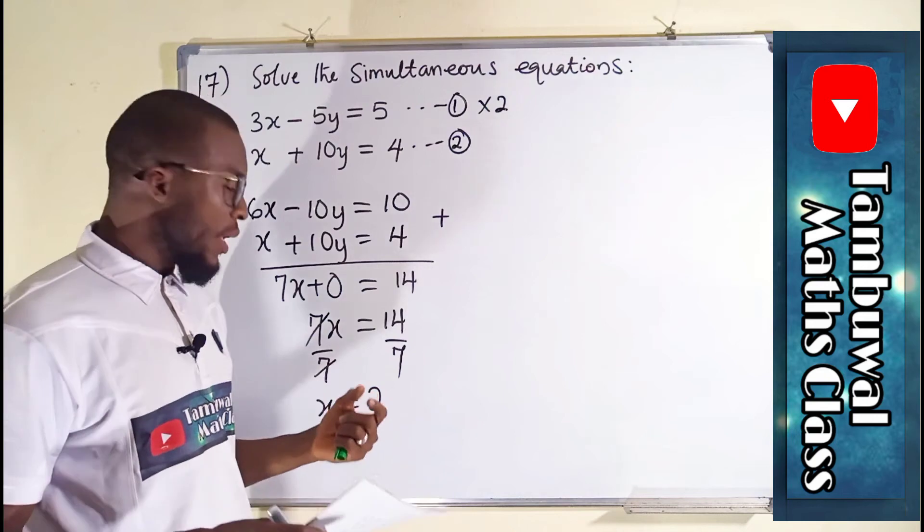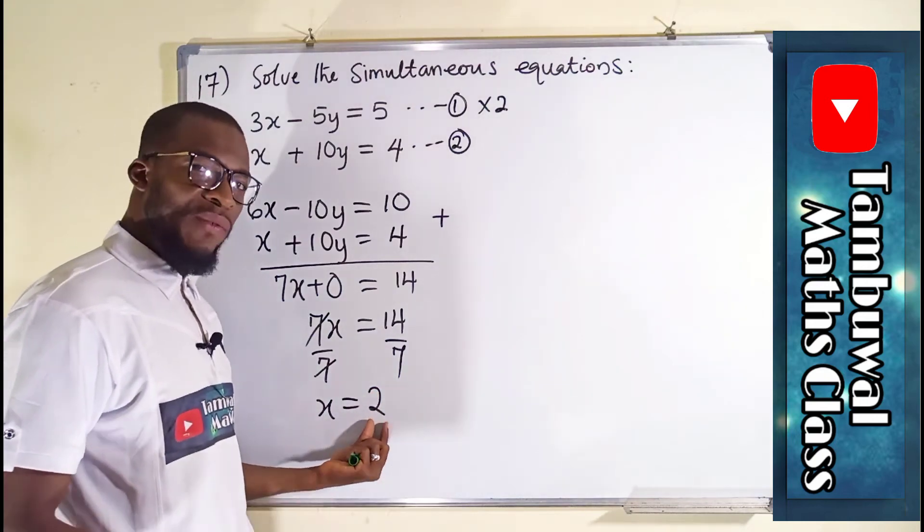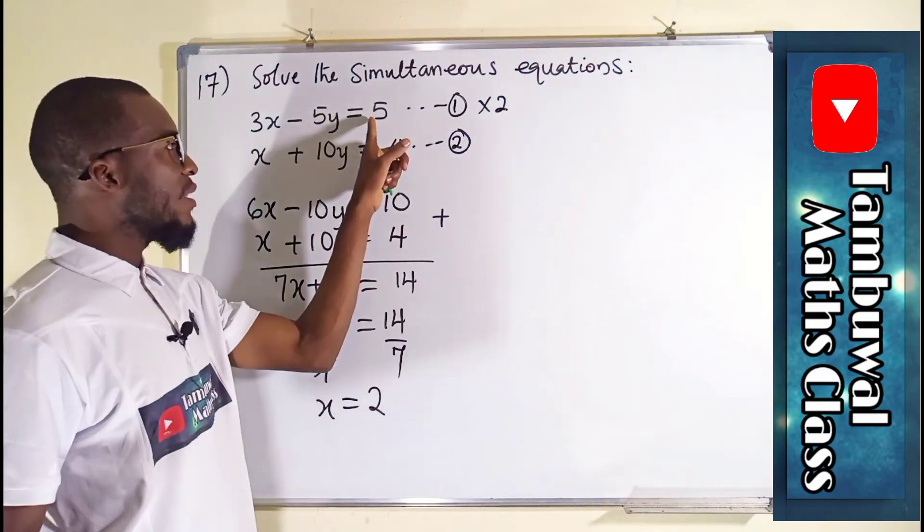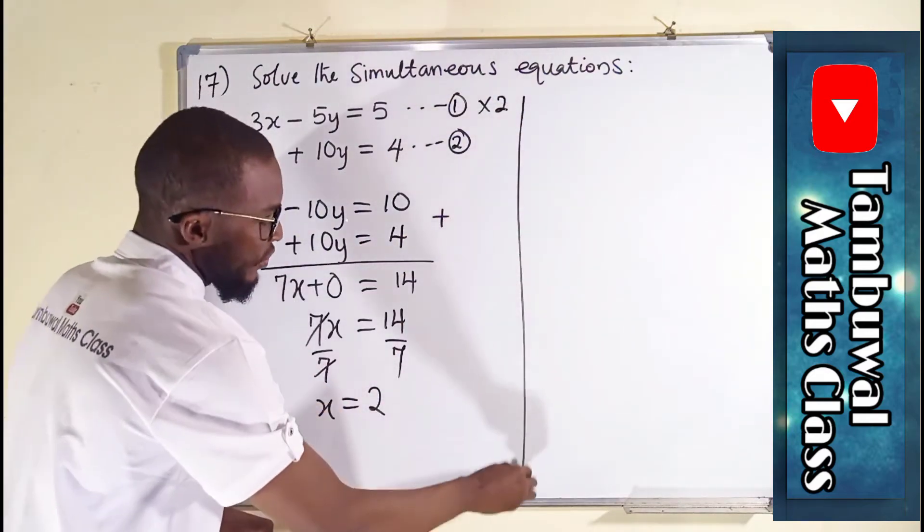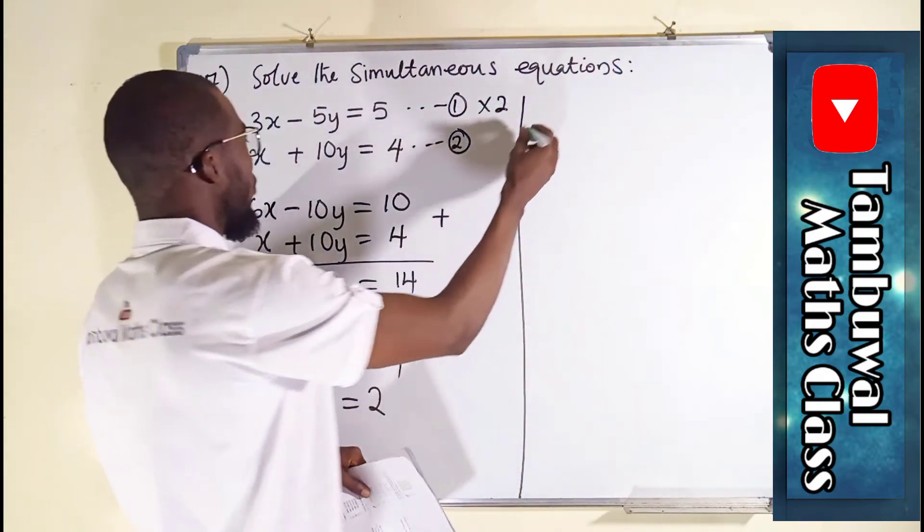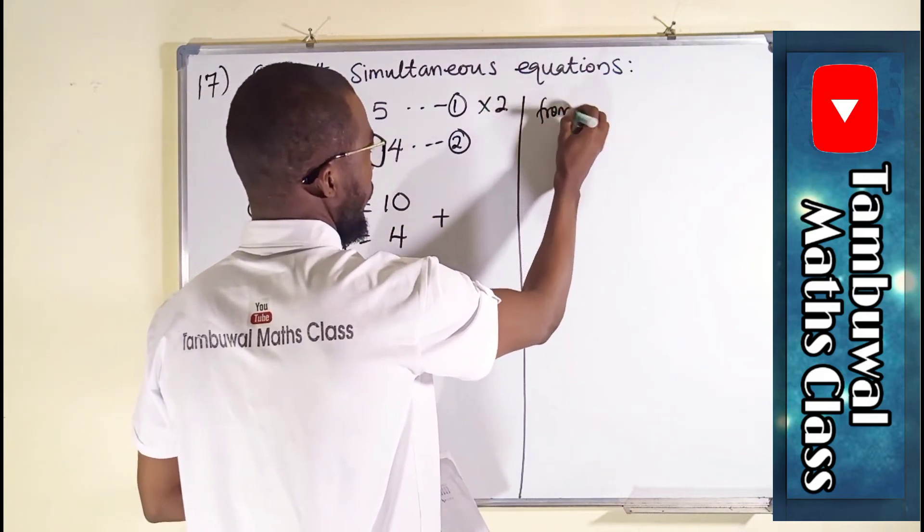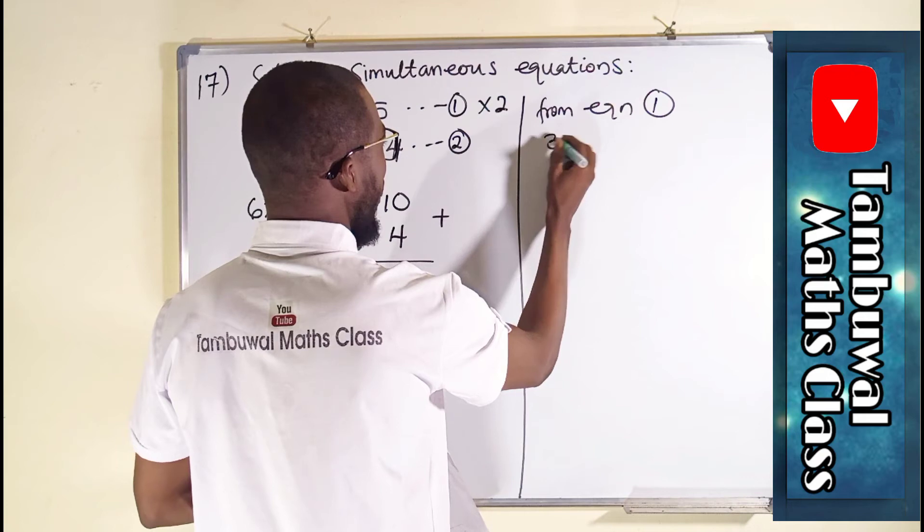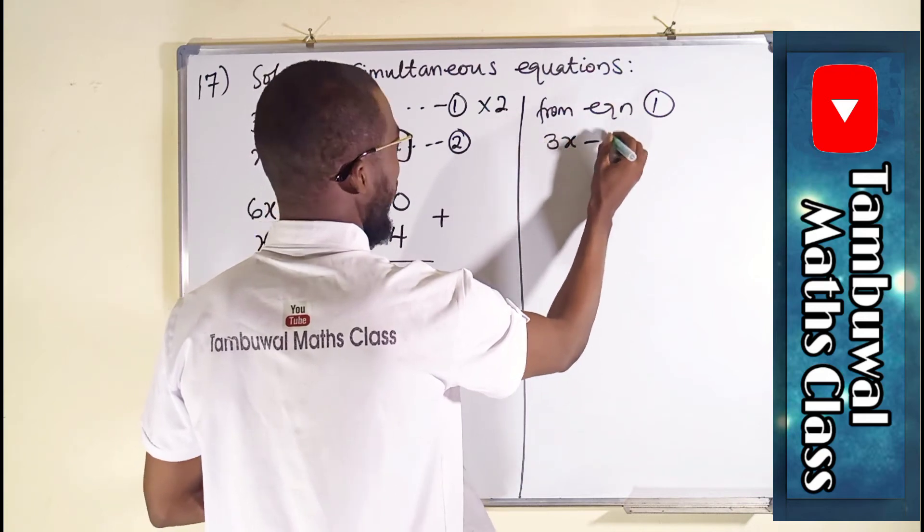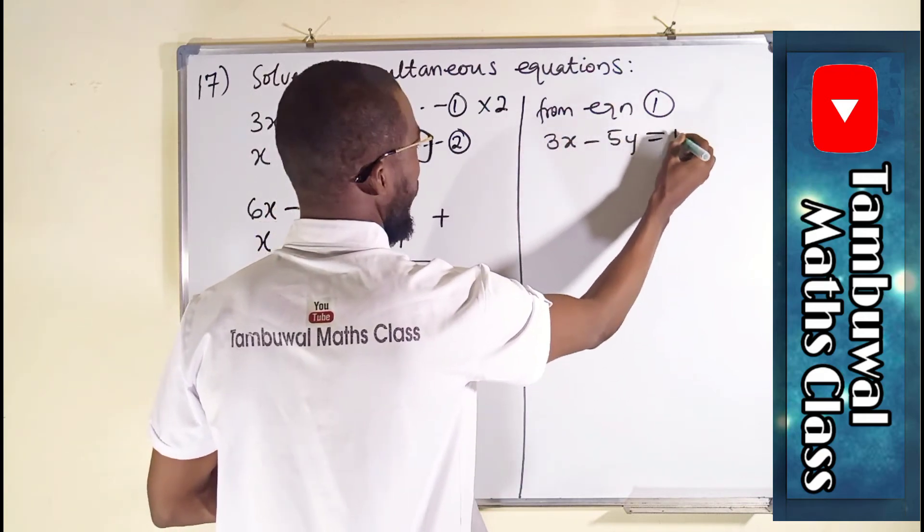So this means that the value of x in these equations is 2. To find the corresponding value of y, we have to substitute the value of x in either this equation or this equation. So let us try maybe equation 1. So from equation 1,